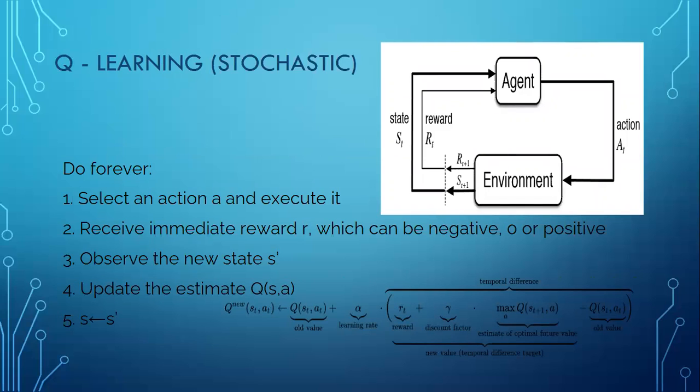Now you can see basic steps for Q-learning. The first step is to select an action A and execute it, then receive immediate reward R, which can be negative, zero or positive. Observe the new state S, update the estimate Q, and update the state at the end. And repeat these steps indefinitely.